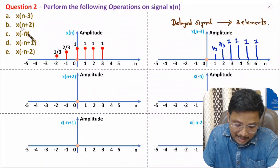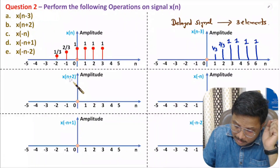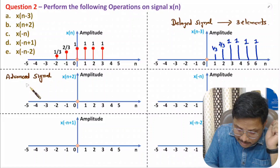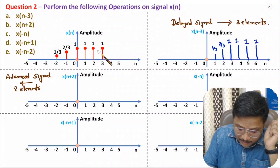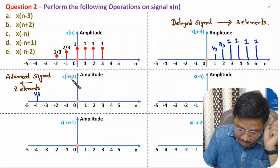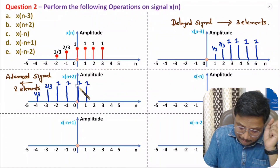Now I will explain the second operation, x(n+2). x(n+2) means we have advanced the signal — we shift the given signal in the negative direction by two elements. The first element at n = minus two will come to n = minus four. So at minus four we have one-third, at minus three we have two-thirds, and then we have four elements with magnitude one. This is how we perform the advance operation.